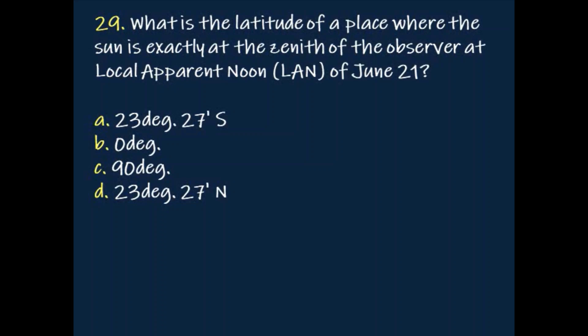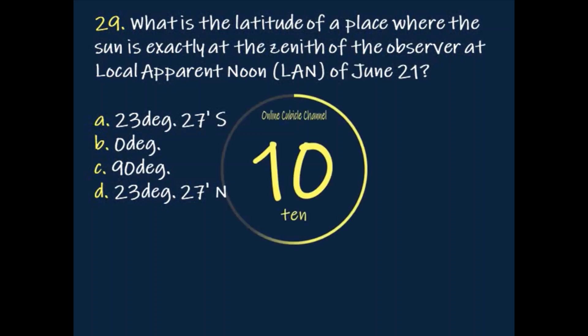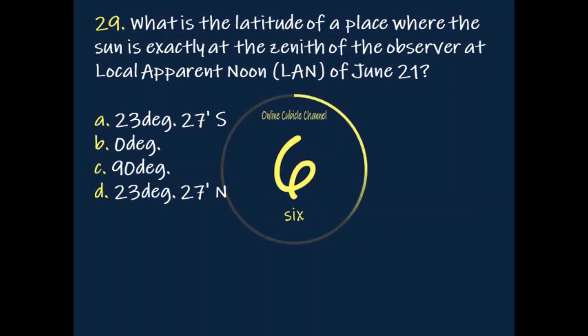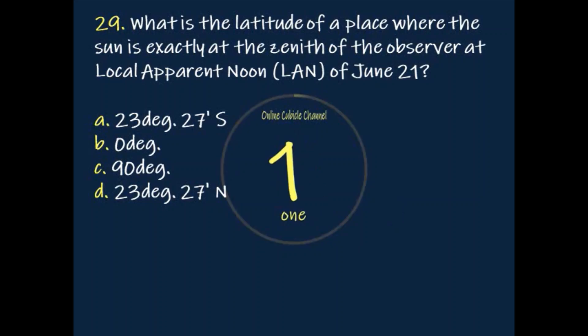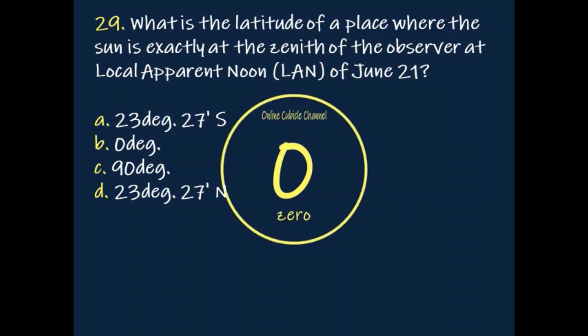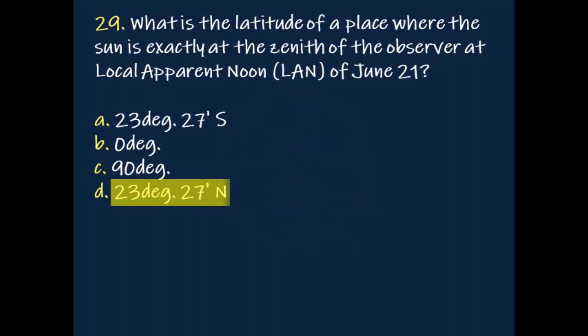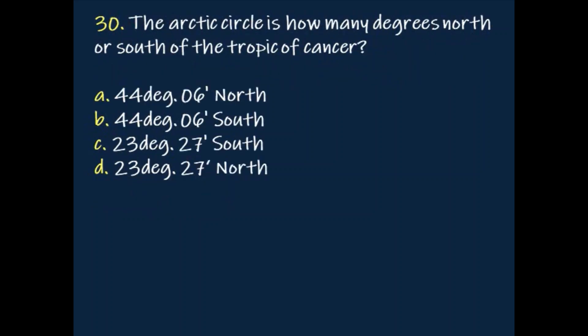Question: What is the latitude of a place where the sun is exactly at the zenith of the observer at local apparent noon (LAN) of June 21st? Answer: 23 degrees 27 minutes north. Question: The arctic circle is how many degrees north or south of the tropic of Cancer?